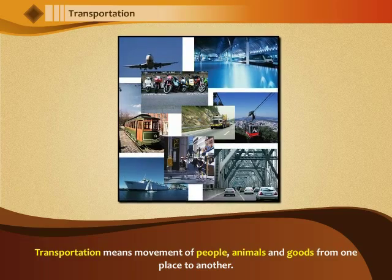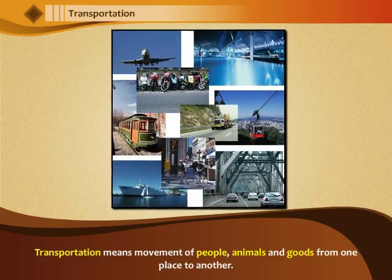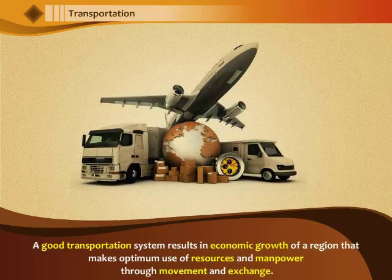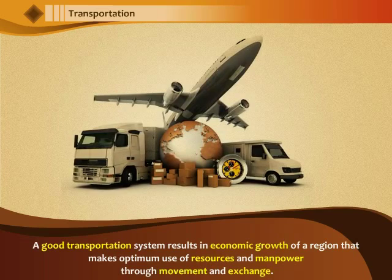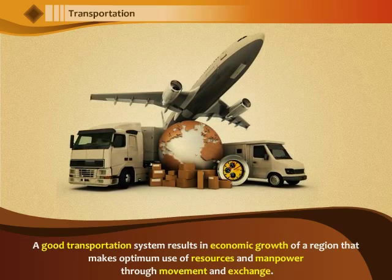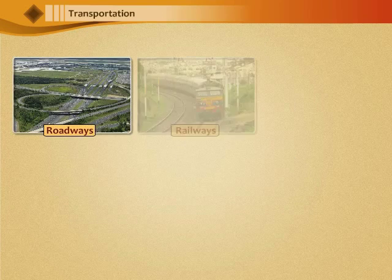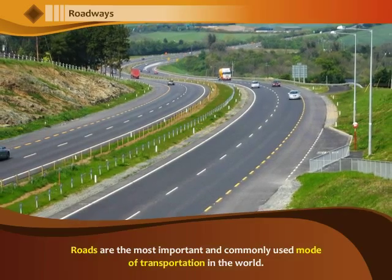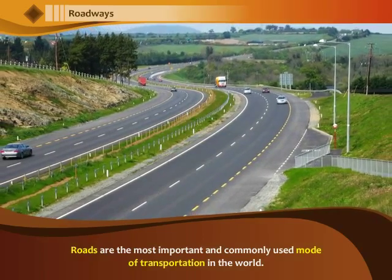Transportation means movement of people, animals and goods from one place to another. A good transportation system results in economic growth of a region that makes optimum use of resources and manpower through movement and exchange. The different modes of transport include roadways, railways, waterways, airways and pipelines. Roads are the most important and commonly used modes of transportation in the world.